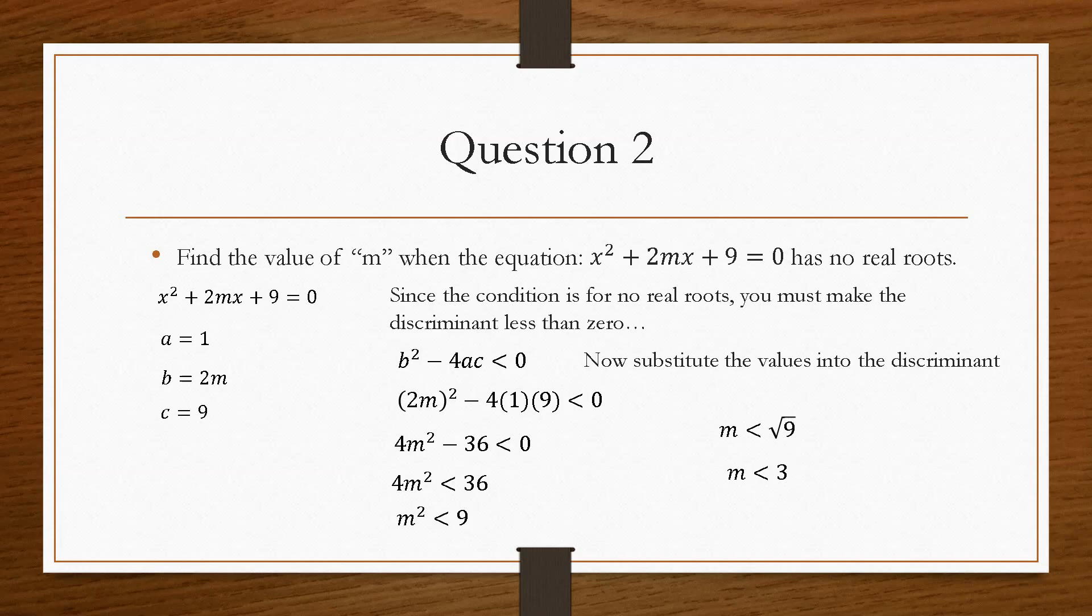So any value of m less than 3 will give a negative discriminant or a value less than zero. And that's how you would go about solving that kind of question there.